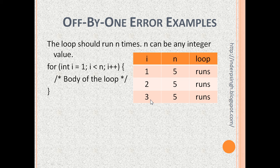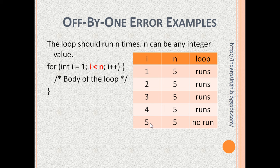i becomes 3, 3 is less than 5, and the loop runs. i becomes 4, 4 is less than 5, and the loop runs. i becomes 5. 5 is not less than 5, so the loop does not run.